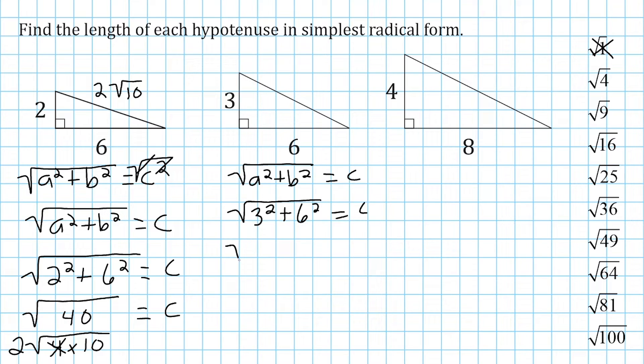And if we square 3, that is 9, and if we square 6, that is 36, and that is going to be equal to c. So we have to find the square root of 9 plus 36, which is 45, in simplest radical form.